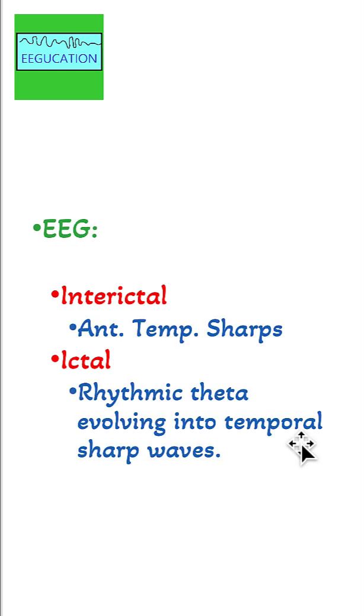Interictally, the EEG shows anterior temporal sharp waves, and ictally, rhythmic theta activity evolving into temporal sharp waves is often seen.